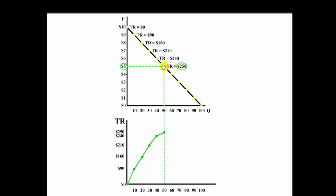Notice as I keep lowering the price to $4, though, if I lower the price to $4, I sell more units in the marketplace, but my total revenue now, 4 times 60, begins to go down.